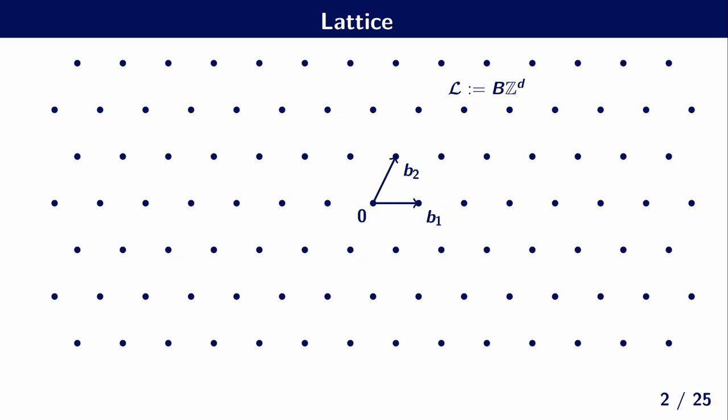So what's a lattice? Well, a lattice is a discrete group that is generated by some bases. And of course, a lattice can be generated by multiple bases. Given any bases, the shortest vector problem asks to find a shortest non-zero vector of the lattice. And in high dimensions, this becomes a hard problem.